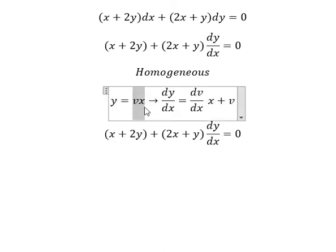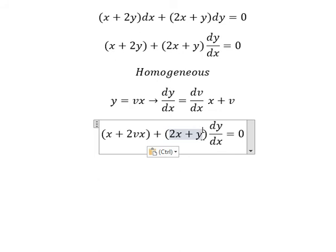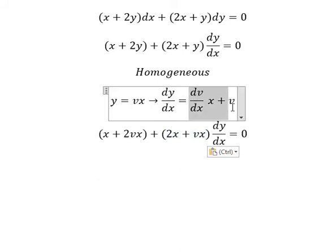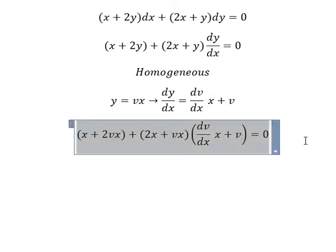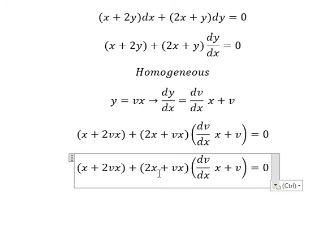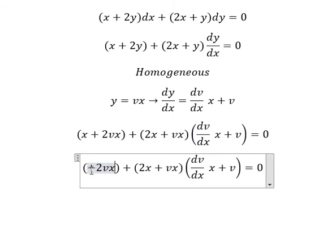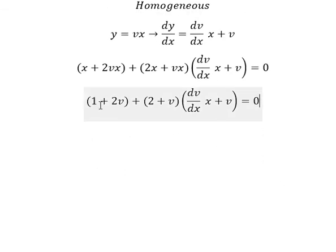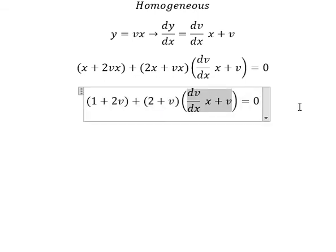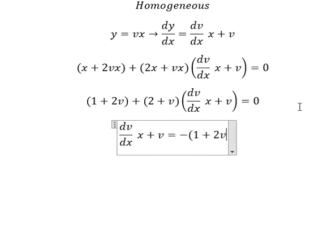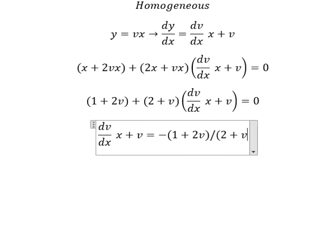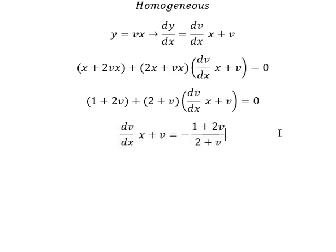So we put this substitution in here. This one we change by this one. Next, we have x, x and x. We simplify. Next, we put this one go to the right and then we divide by 2 plus v.